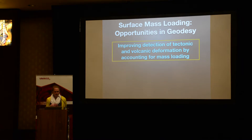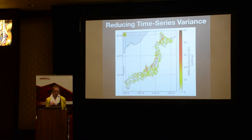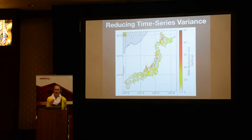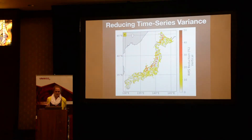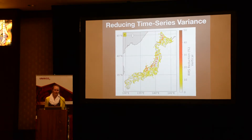In tectonically active Japan, for example, modeling and removing mass loading effects that are not accounted for during standard GPS data processing can reduce time series scatter by up to 10 to 50 percent depending on location.